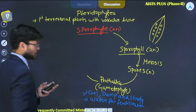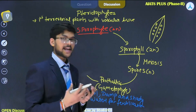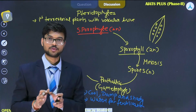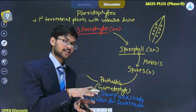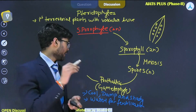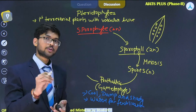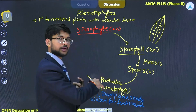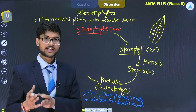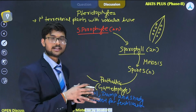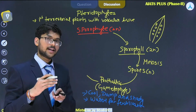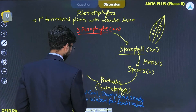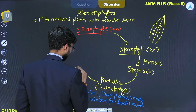The prothallus or gametophytic structure may contain female and male sex organs. If a particular species is homosporous, the male and female gametophytes are present on the same plant — a monoecious condition. In heterosporous species, one gametophyte contains male gametophyte and the other contains female gametophyte — a dioecious condition. It consists of antheridia and archegonia as male and female sex organs.